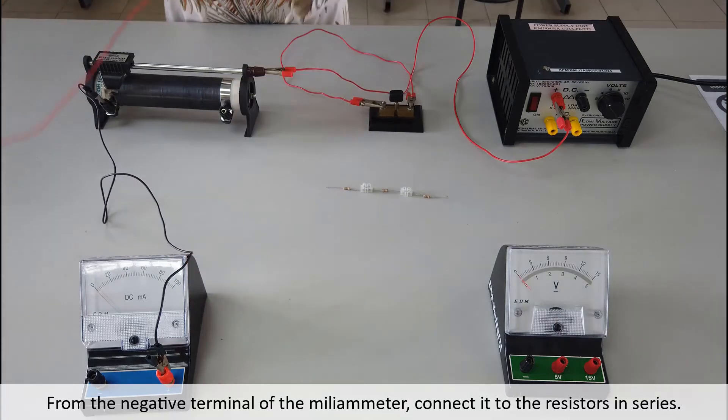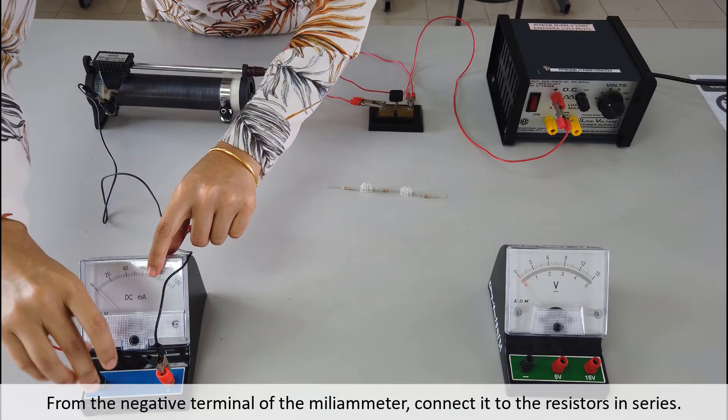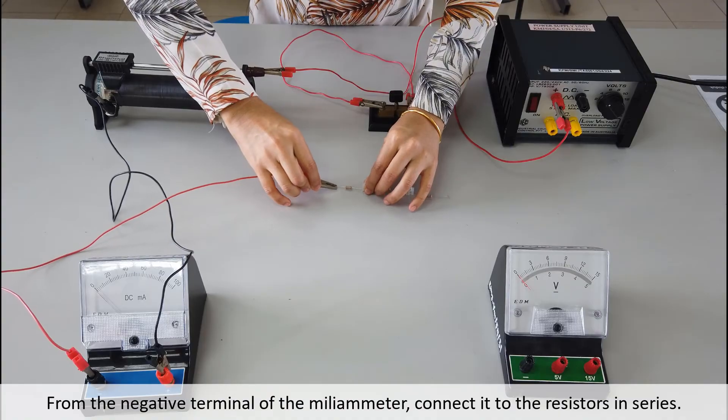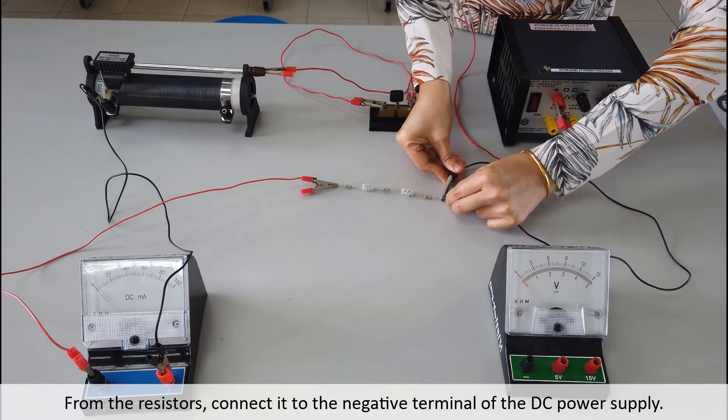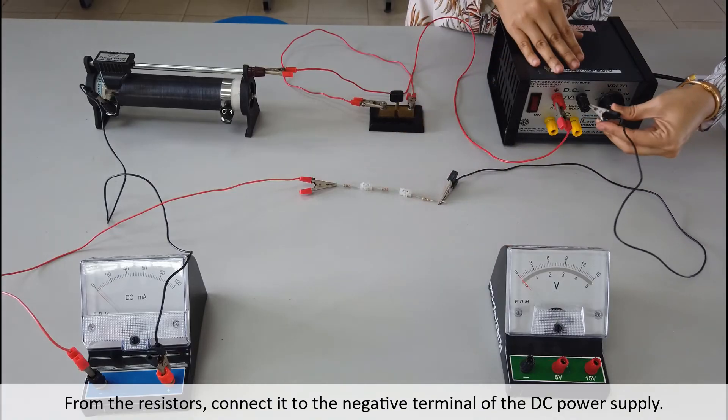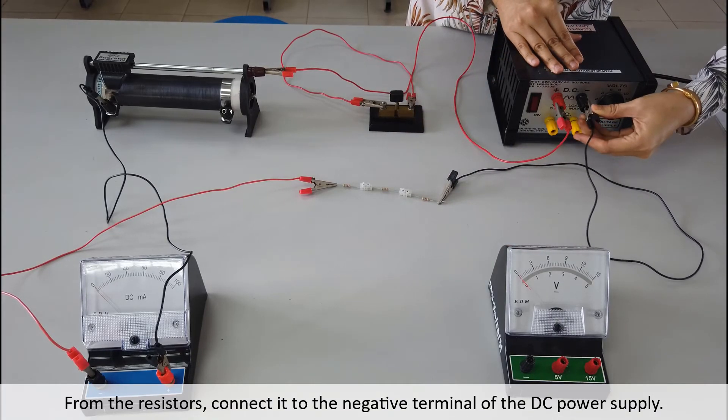From the negative terminal of the milliammeter, connect it to the resistors in series. From the resistor, connect it to the negative terminal of the DC power supply.